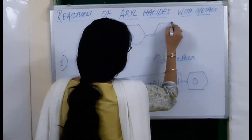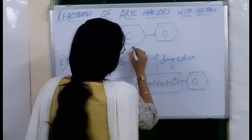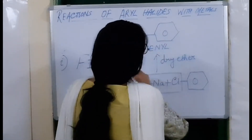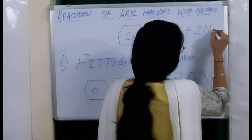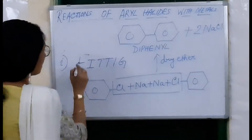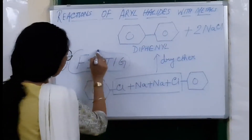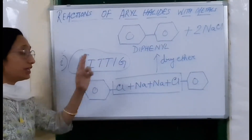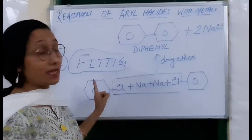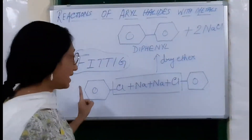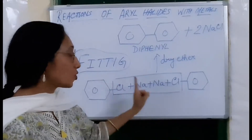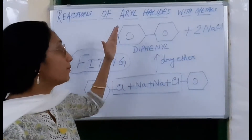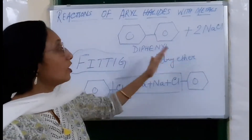The product is diphenyl or biphenyl, and two NaCl are released. This is the Fittig reaction. So in the Fittig reaction, chlorobenzene or any aryl halide is heated with sodium in the presence of dry ether, and the product is diphenyl or biphenyl.